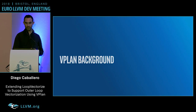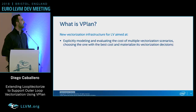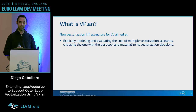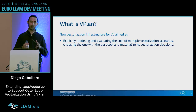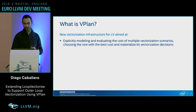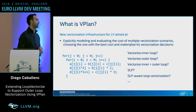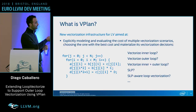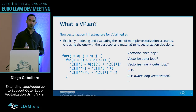What is vPlan? vPlan is a new vectorization infrastructure aimed at explicitly modeling and evaluating the cost of multiple vectorization scenarios, choosing the best one, and then materializing the vectorization decisions on the input IR. For example, given a loop nest, we could vectorize the inner loop, the outer loop, both simultaneously as nested vectorization, or apply SLP-aware loop vectorization. vPlan evaluates these and chooses the best approach.